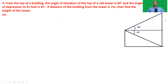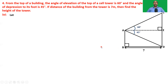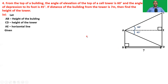The question is: what is the height of the tower? Let us label the figure A, B, C, D, E. Given BD = 7 meters — this is the distance of the building from the tower. Both angles at B and D are 90 degrees. Let AB be the height of the building, CD the height of the tower, and AE the horizontal line. Given: angle CAE = 60 degrees and angle DAE = 45 degrees. Since AE is parallel to BD, AE = BD = 7 meters.